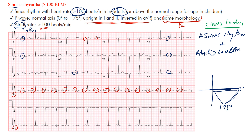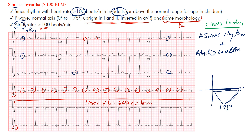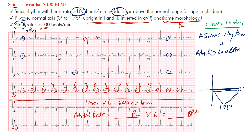Let's work to find the rate. A standard 12-lead ECG is a 10-second strip; multiply by six to get 60 seconds, which equals one minute. To find the atrial rate, count the number of P waves and multiply by six to get an estimate in beats per minute. This works for both regular and irregular rhythms. So let's count: one, two, three, four, five, six, seven, eight, nine, ten, eleven, twelve, thirteen, fourteen, fifteen, sixteen, seventeen.